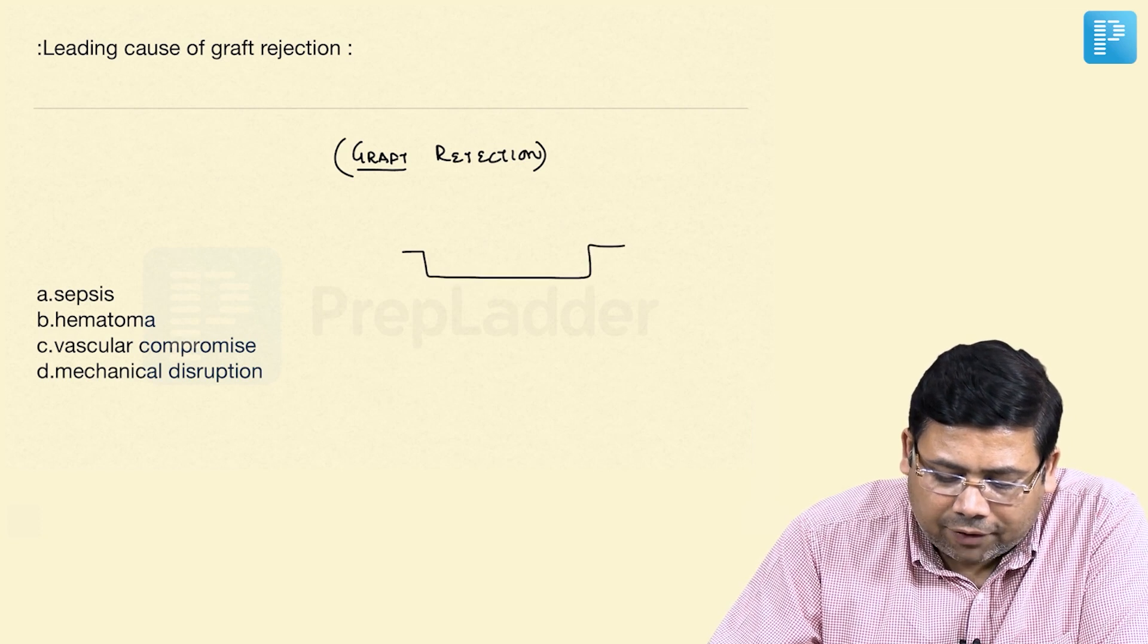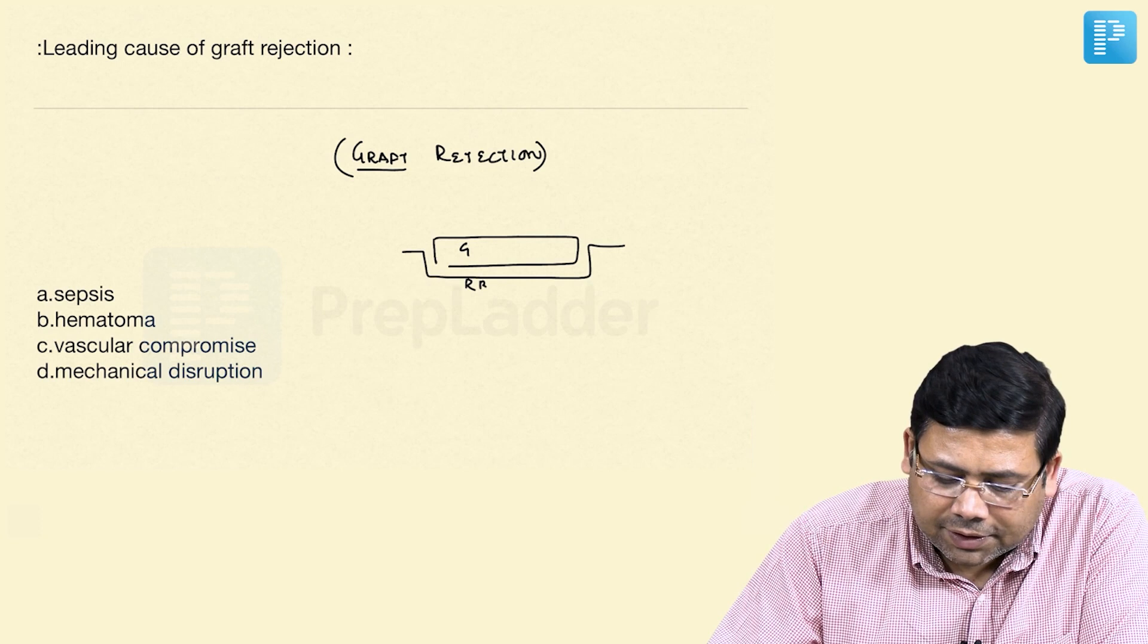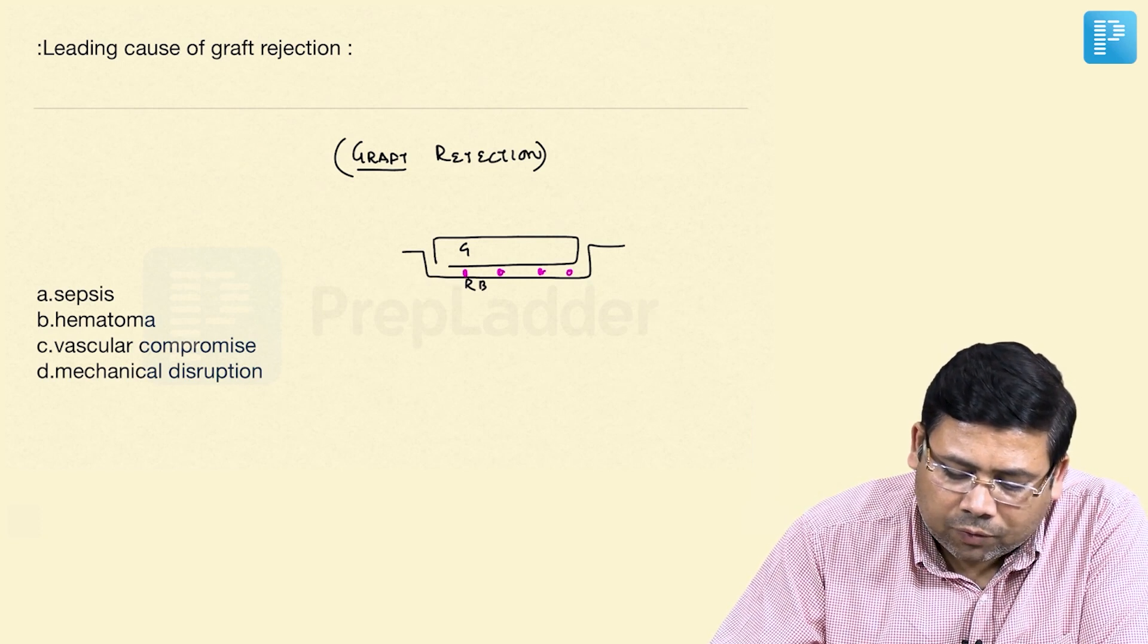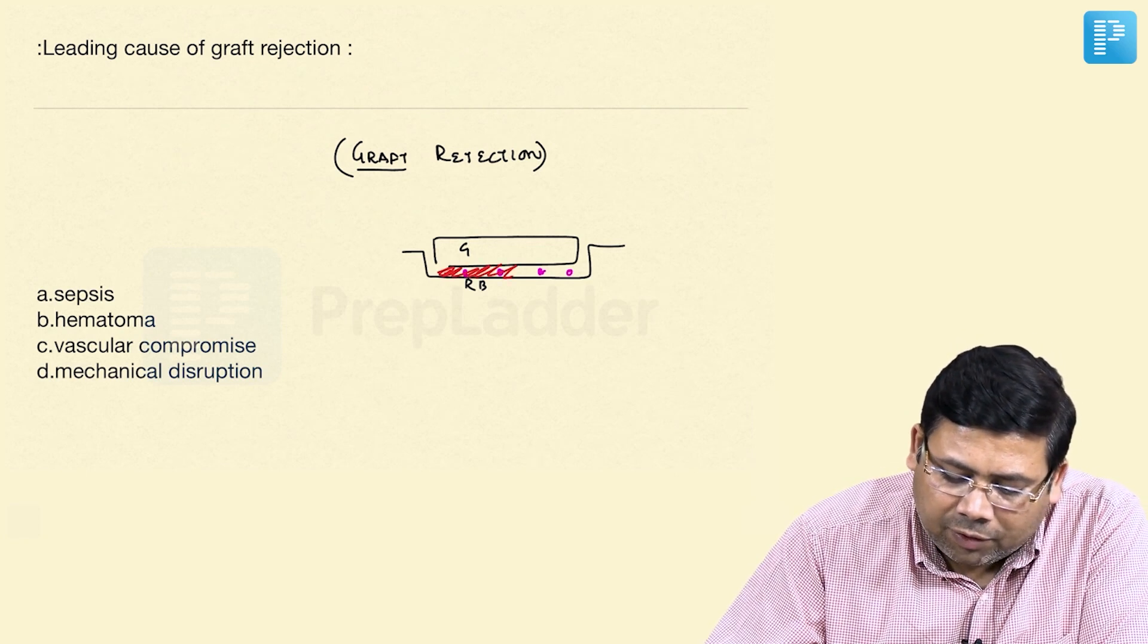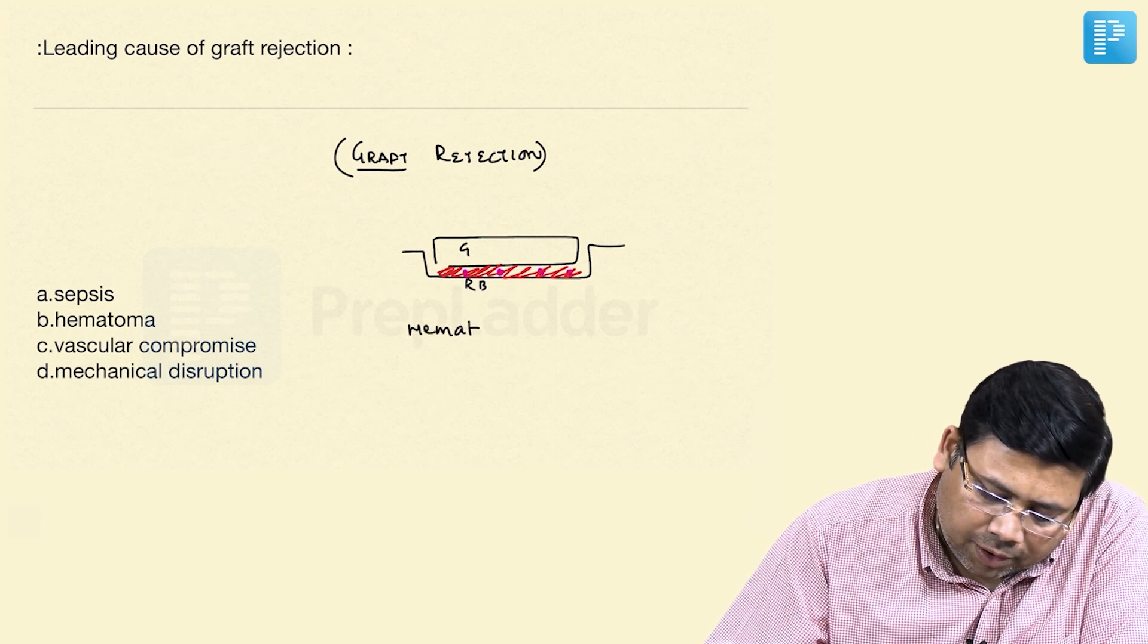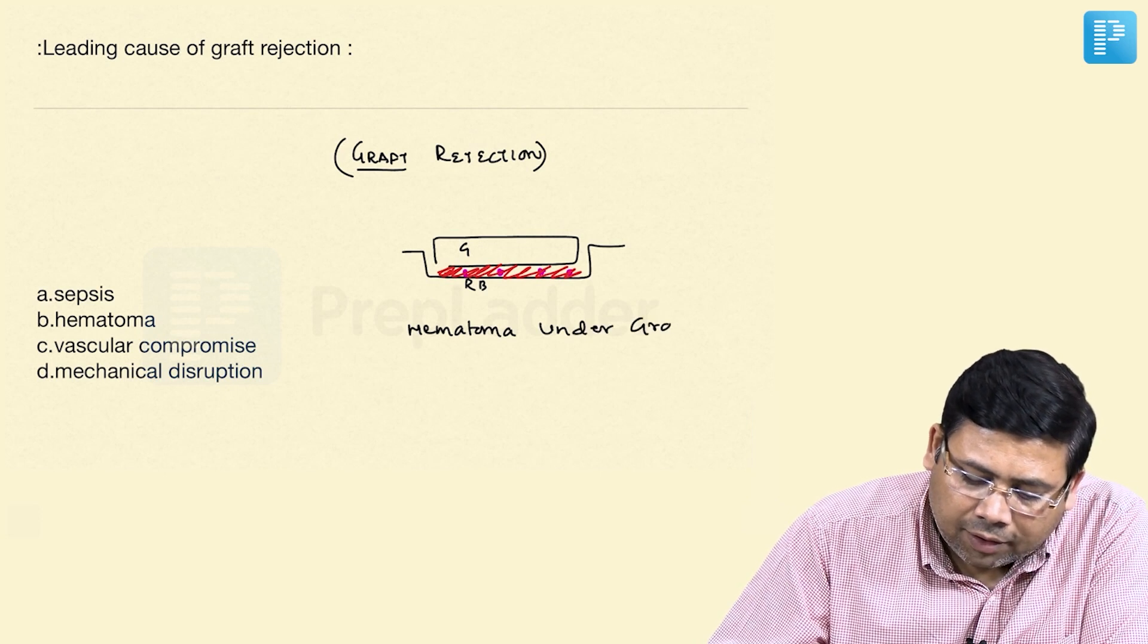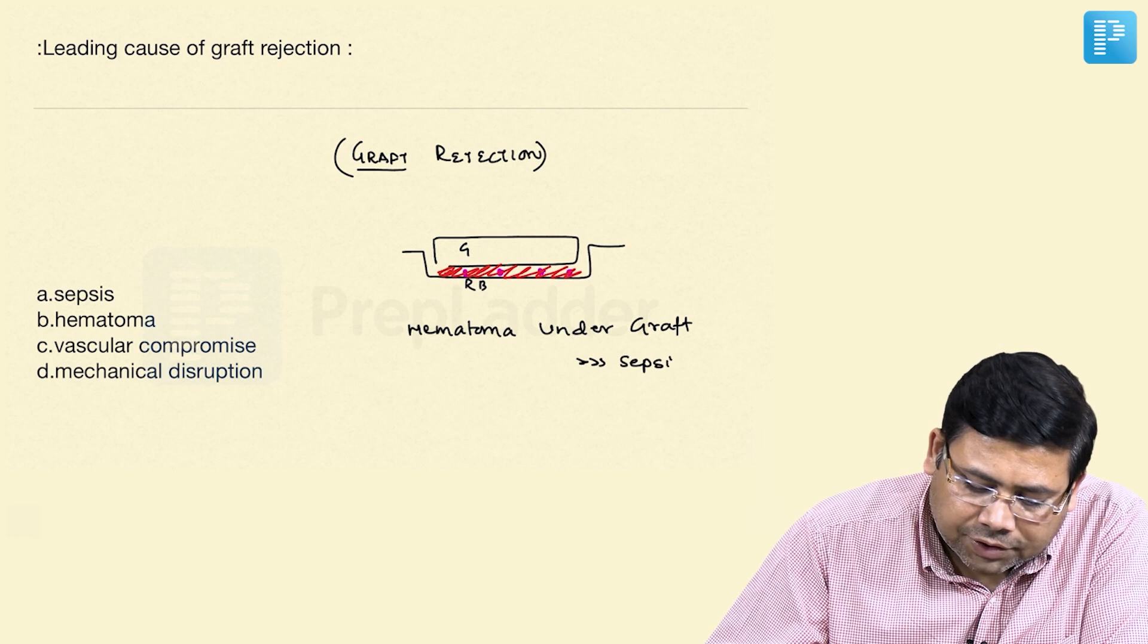Whenever you place a graft, it is between the graft and the recipient bed where a lot of molecules, inflammatory molecules get deposited, and this is the time when there may be local hematoma also. You have to understand that hematoma under the graft is the most frequent cause of graft rejection.